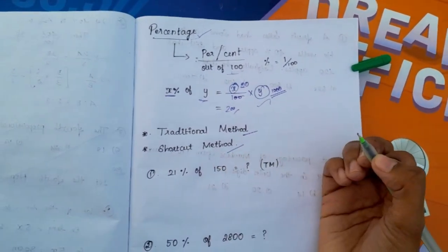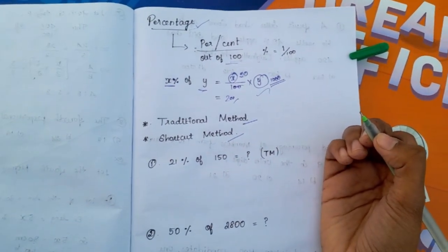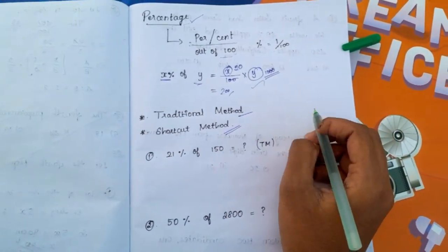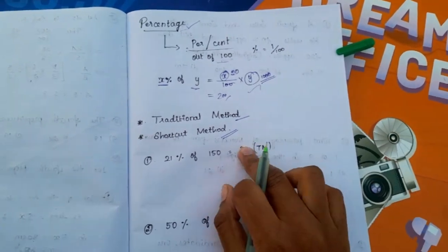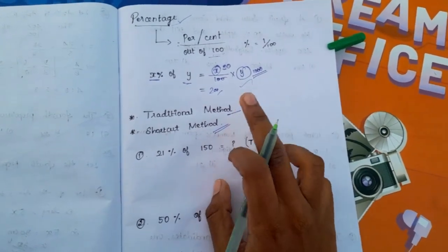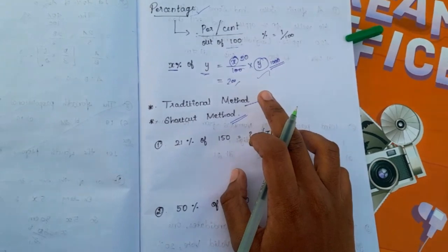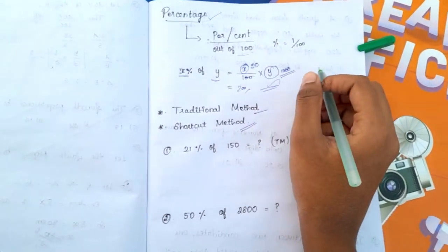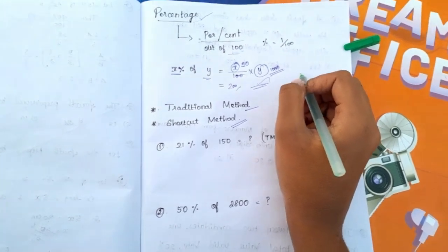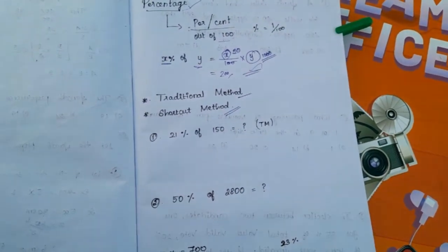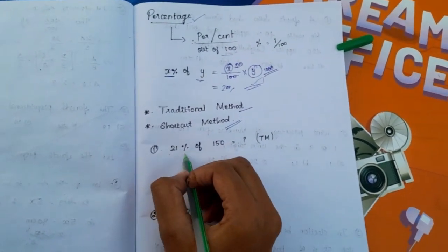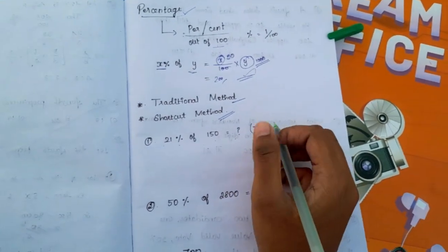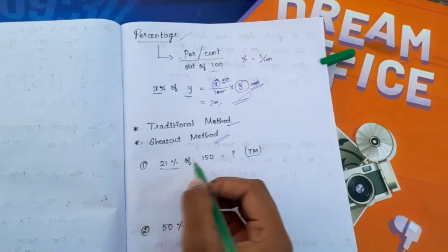We have two methods: the traditional method and the shortcut method. You can use the shortcut method and practice it. With the traditional method, you use the full calculation. Sample problem: 21% of 150. We can use this method.